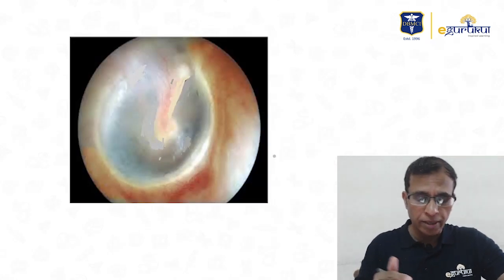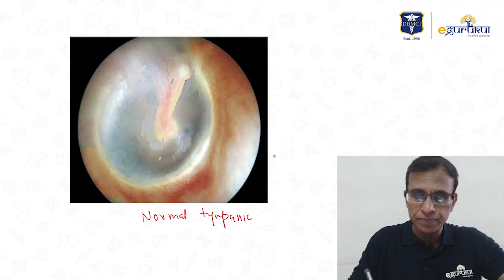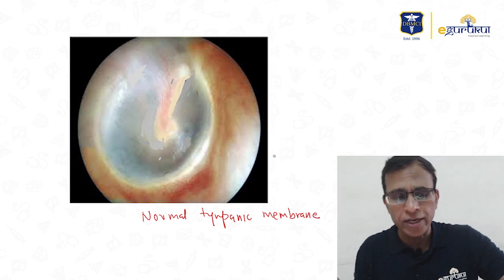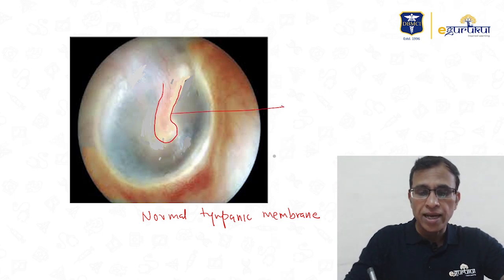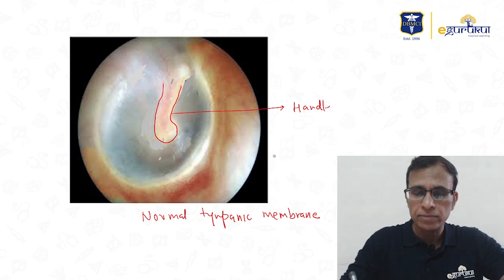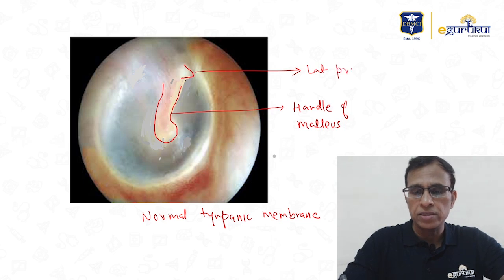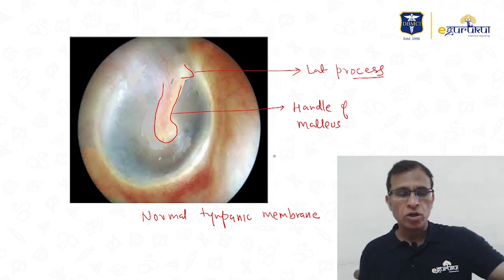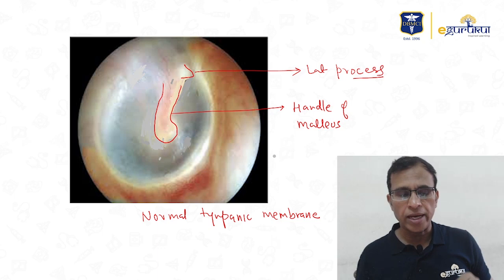Next is a normal tympanic membrane. Please note the color, which is pearly white. One of the two things you should be able to identify is this bone — the handle of malleus. And this bone which is projecting out is the lateral process of malleus. On the normal tympanic membrane, you should be able to identify at least these two structures very prominently.